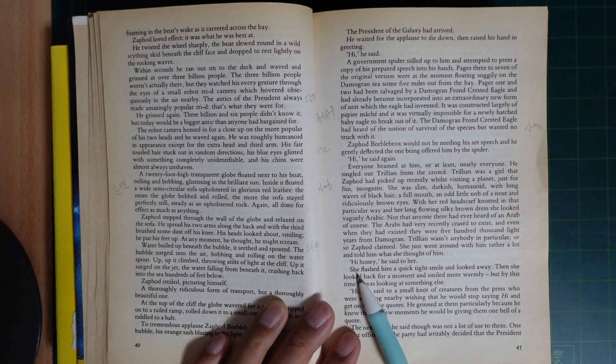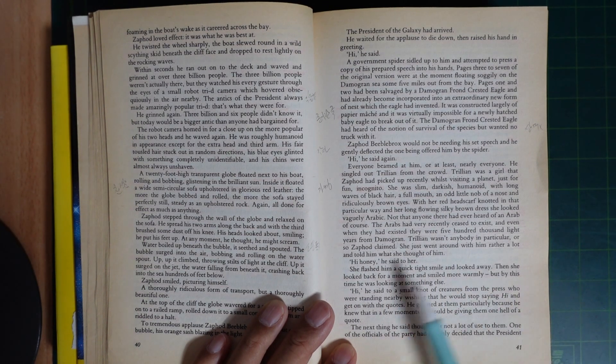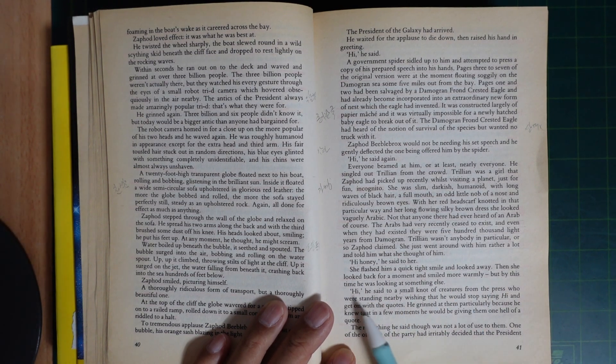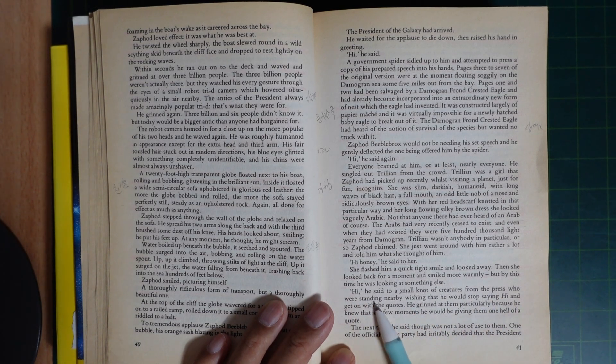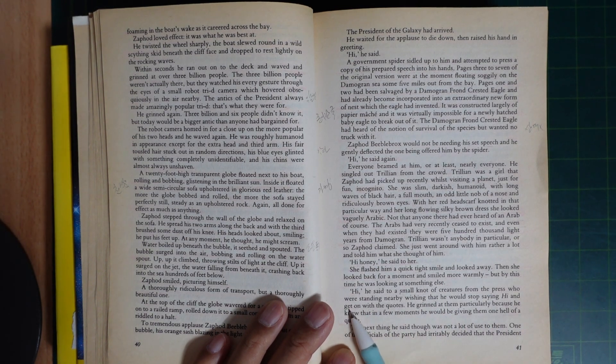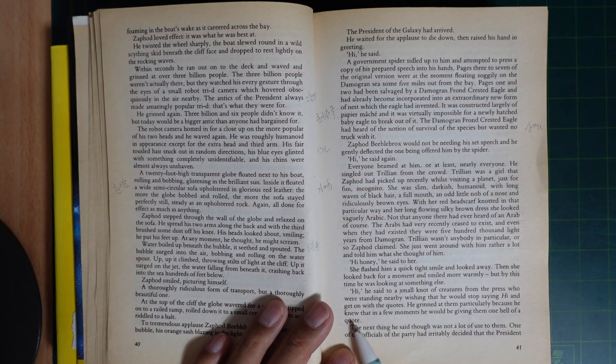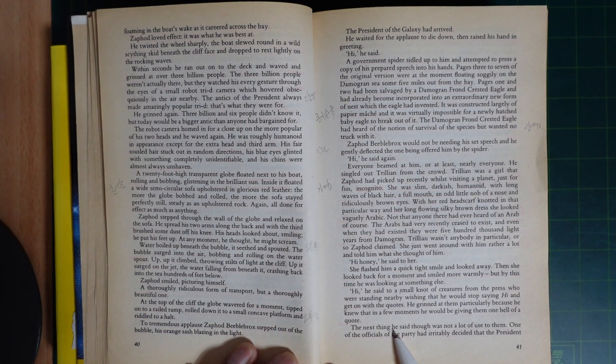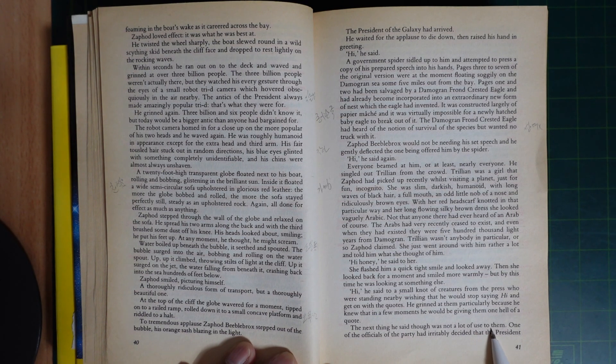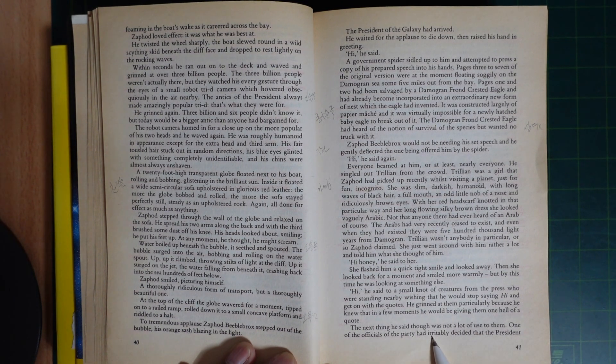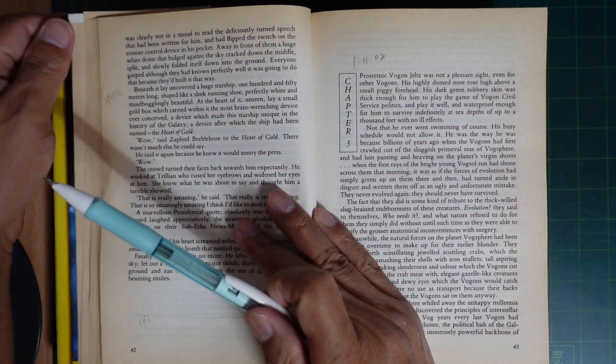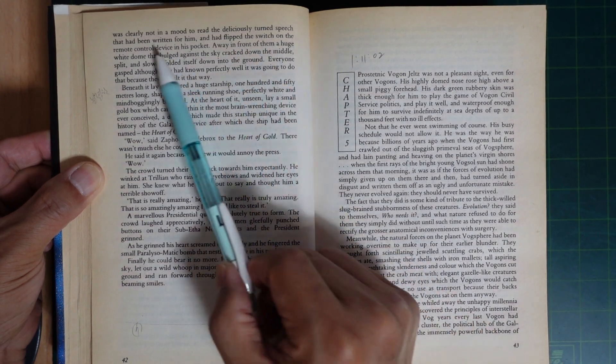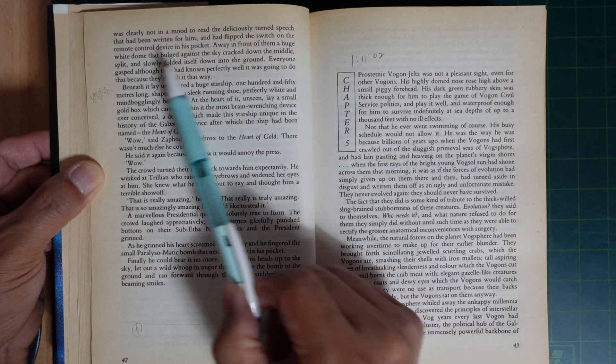Hi, honey, he said to her. She flashed him a quick, tight smile and looked away. Then she looked back for a moment and smiled more warmly, but by this time he was looking at something else. Hi, he said to a small knot of creatures from the press who were standing nearby, wishing that he would stop saying hi and get on with the quotes. He grinned at them, particularly because he knew that in a few moments he would be giving them one hell of a quote. The next thing he said, though, was not a lot of use to them. One of the officials of the party had irritably decided that the President was clearly not in a mood to read the deliciously turned speech that had been written for him. He flipped the switch on the remote control device in his pocket.